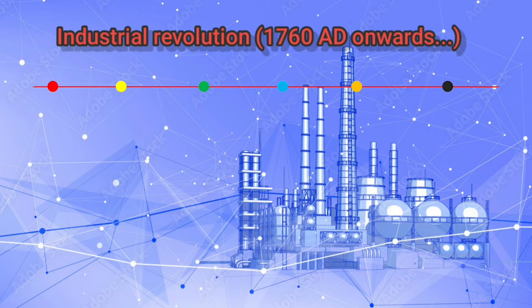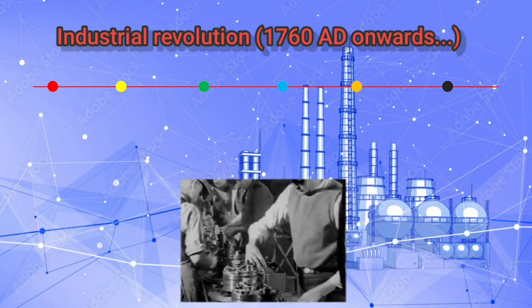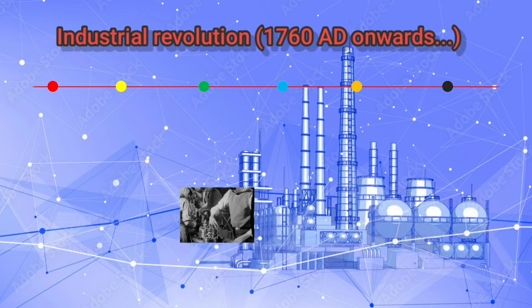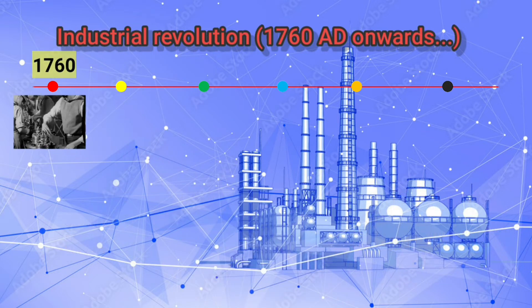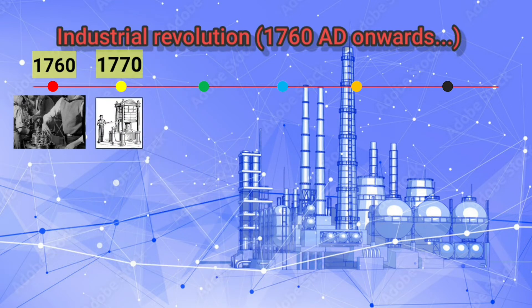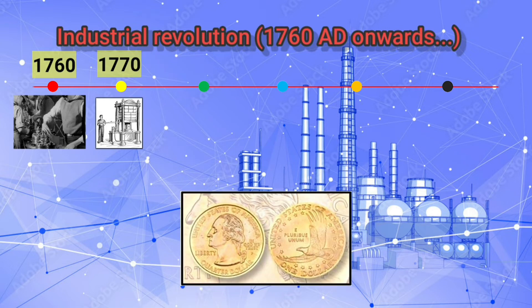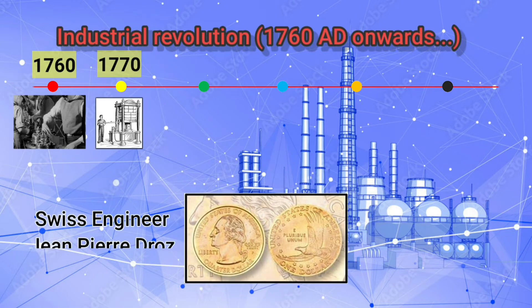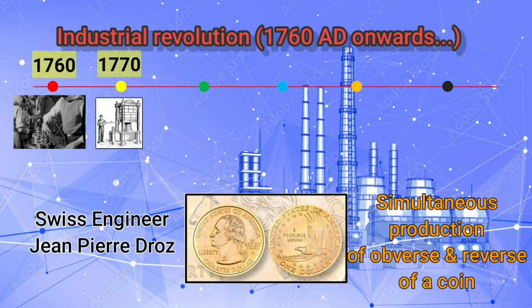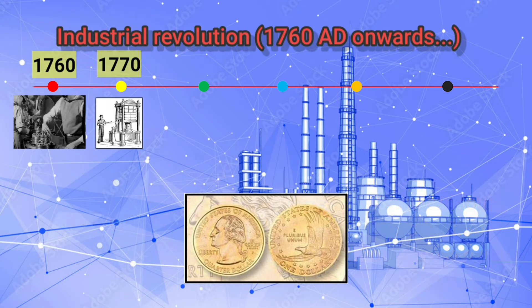Now let us look at some key events that happened during the industrial revolutions. At the beginning of the industrial revolution, high quality production of parts improved after the invention of the assembly line in 1770. The hydraulic press was developed by Joseph Bramah in 1783. Swiss engineer John Pierre Rose successfully perfected the sheet metal process for the simultaneous production of the reverse and obverse of coins.